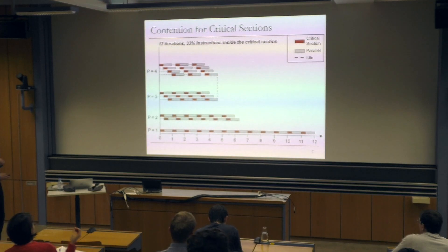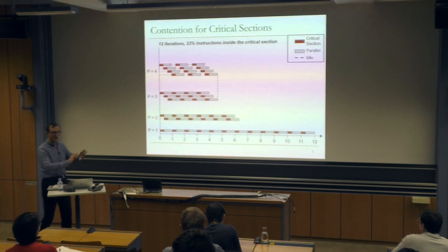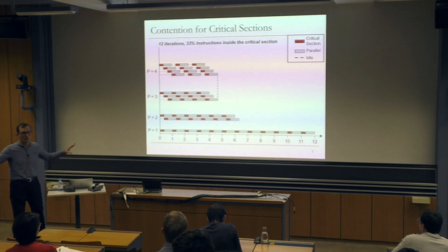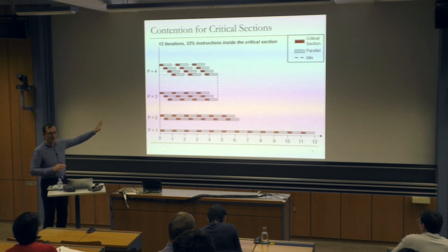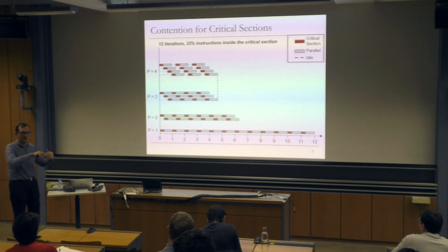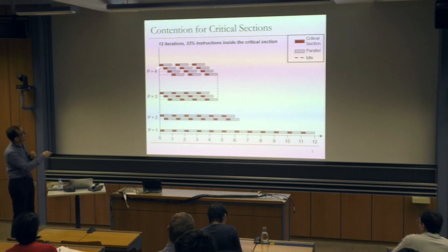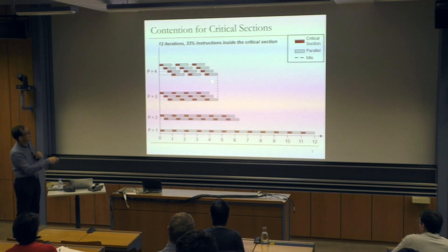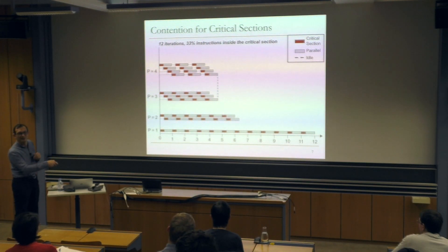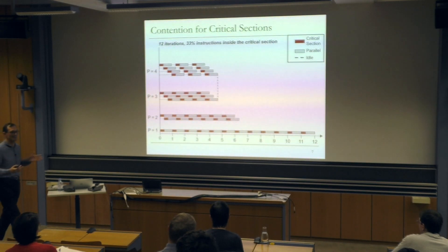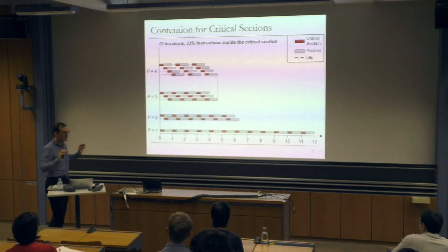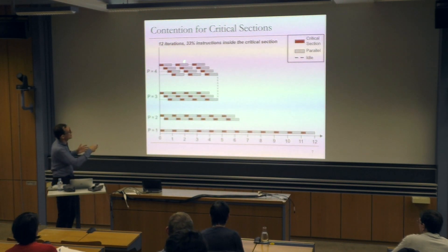Going from three to four processors, you don't gain performance — you just add more waiting. In a real system you actually lose performance because you need to communicate shared data and locks between four processors instead of three. Even in this purest example without that overhead, you're now limited by the critical sections. At any given point, there's a thread in the critical section, so adding one more processor just adds more waiting because there's not enough parallelism to cover the critical section anymore. This is essentially Amdahl's law put in a different way.